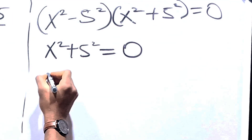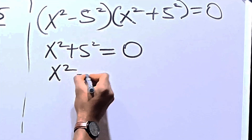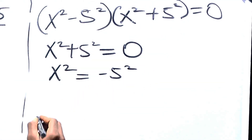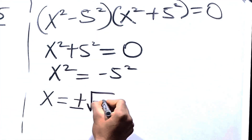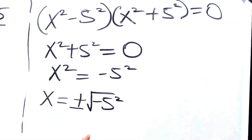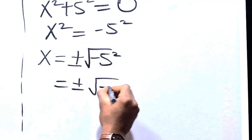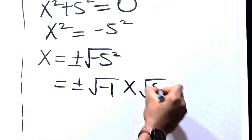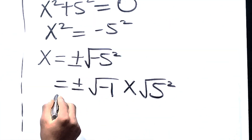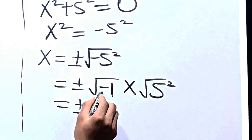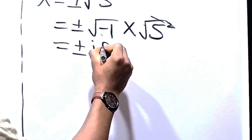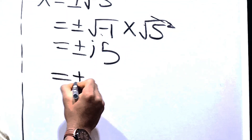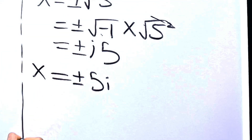We have x squared equals negative 5 squared. Hence, x equals plus or minus the square root of negative 5 squared. We can split this as plus or minus the square root of negative 1 times the square root of 5 squared. Since the square root of negative 1 is i, and the square root of 5 squared is 5, this becomes plus or minus 5i. So x equals plus or minus 5i.